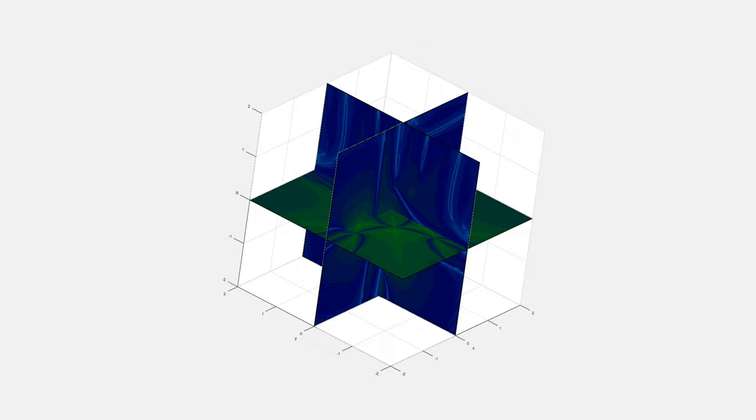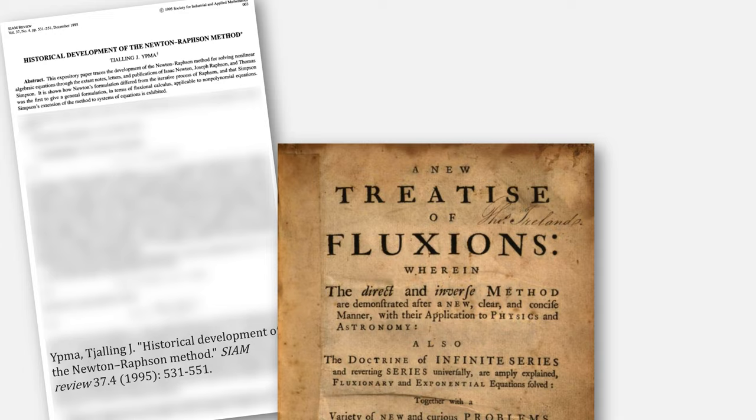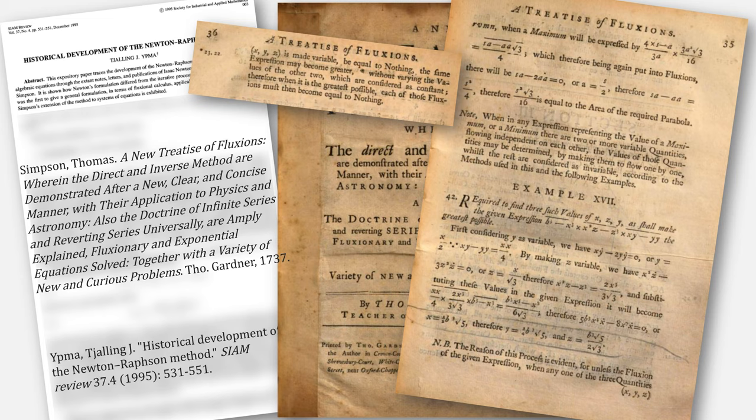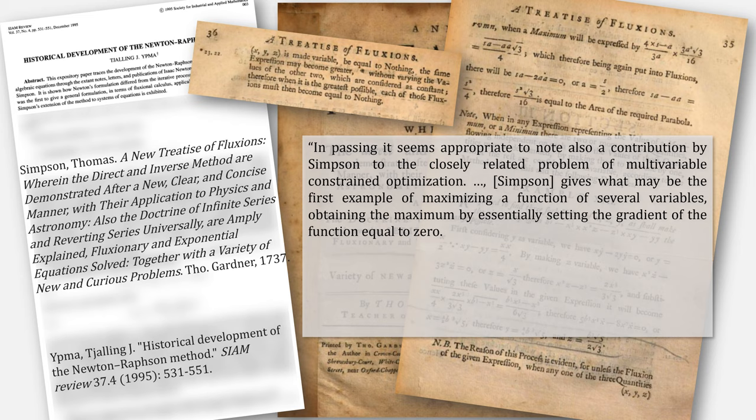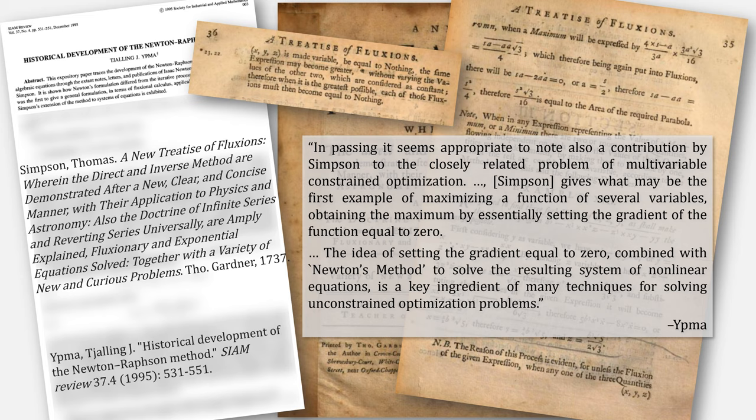For some more context, let's turn back again to Ypma's paper on the history of Newton's method. It refers to another document by Simpson called A New Treatise of Fluxions, with these examples. To quote, In passing, it seems appropriate to note also a contribution by Simpson to the closely related problem of multivariable constraint optimization. Simpson gives what may be the first example of maximizing a function of several variables, obtaining the maximum by essentially setting the gradient of the function equal to 0. The idea of setting the gradient equal to 0, combined with Newton's method to solve the resulting system of nonlinear equations, is a key ingredient of many techniques for solving unconstrained optimization problems.